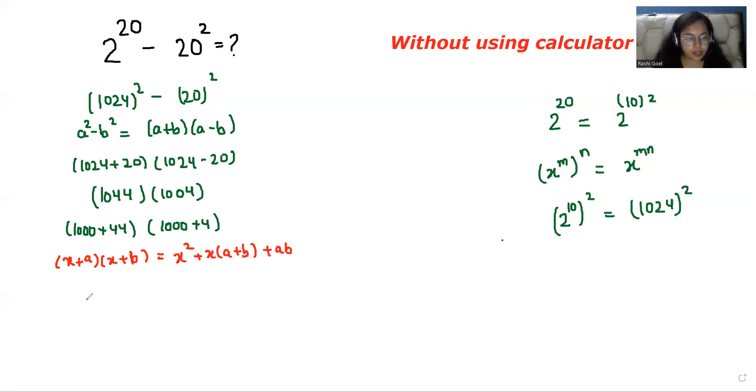So x is 1000, a is 44, and b is 4. x^2 equals 1000^2 which is 1 million. (a+b) equals 48, so 48 times 1000 is 48,000. And ab equals 44 times 4 which is 176.